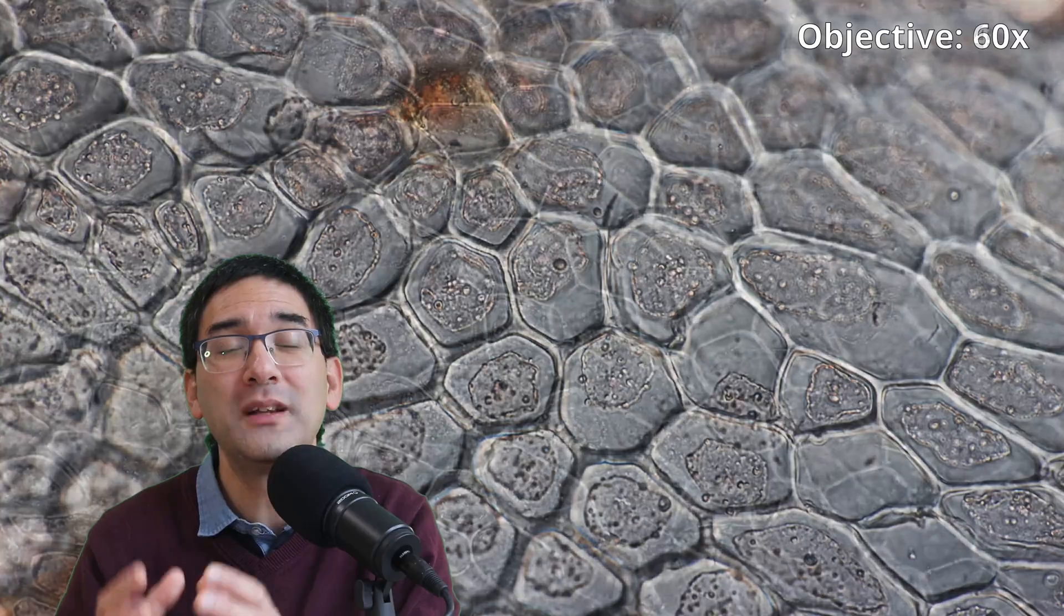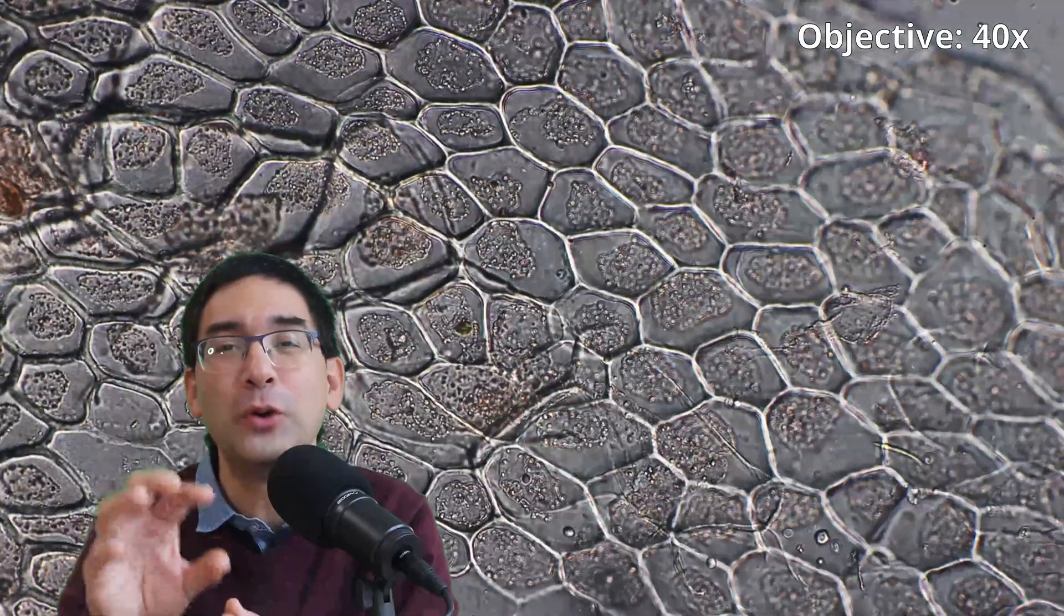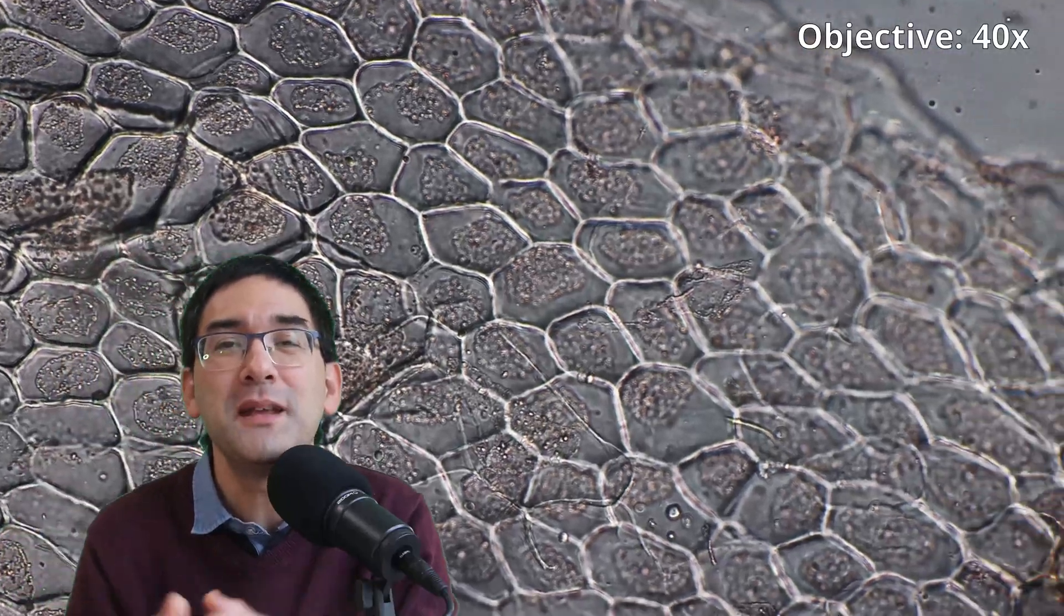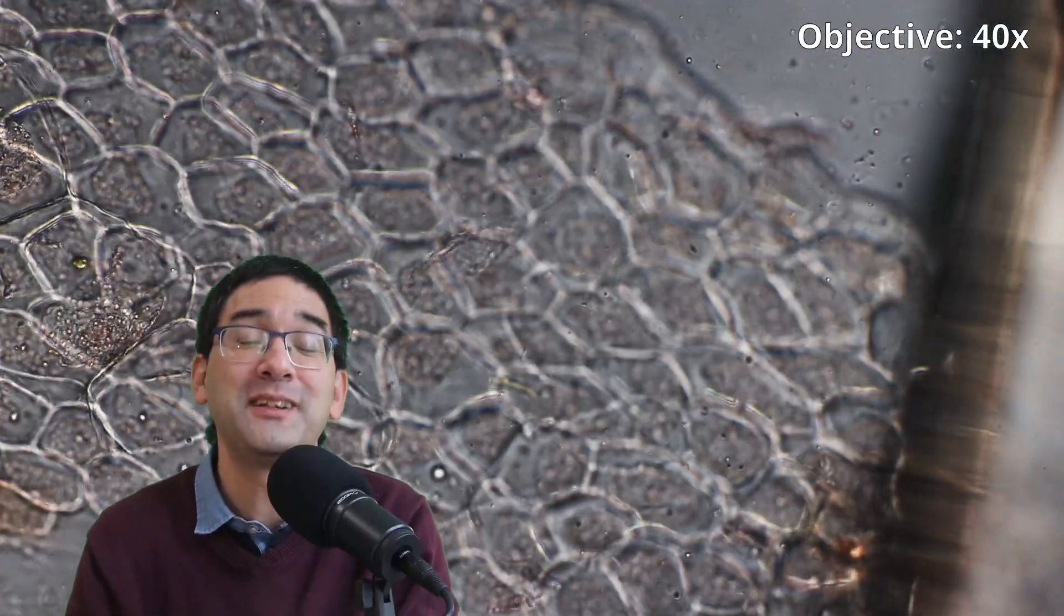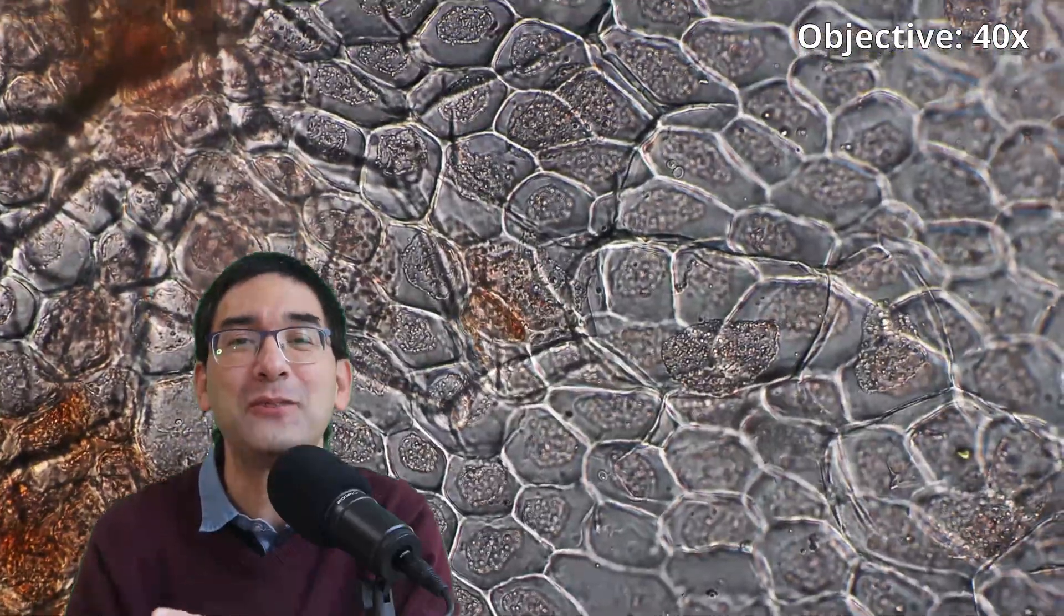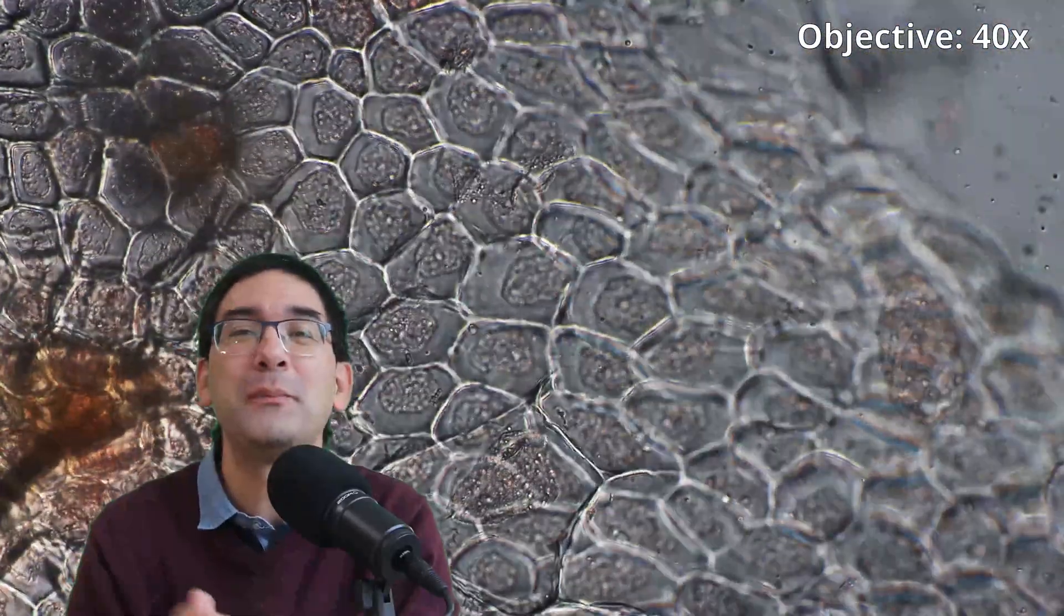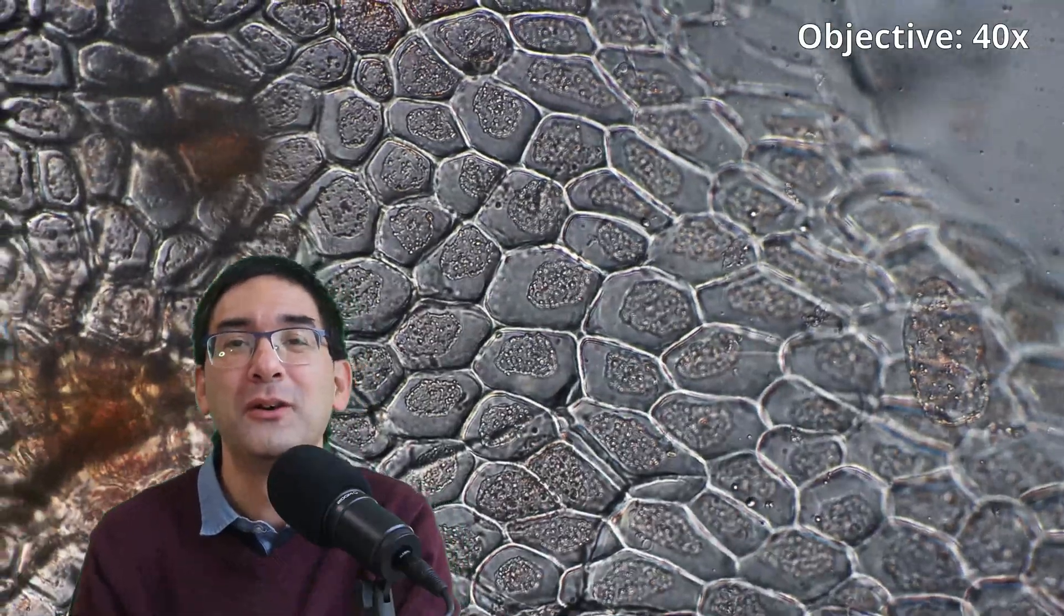Because at that time the cell wall, with the microscopes that they had, was the most prominent structure. So they were kind of wondering whether or not the cell wall is actually the living part of a cell and maybe the contents are just empty spaces. Later on they did find out that actually the cell wall is not the living part but the cytoplasm in the center of each cell is actually the metabolically active part of the cell.